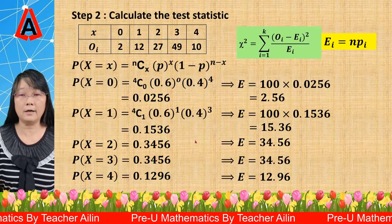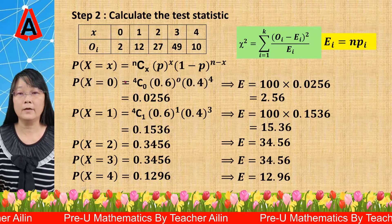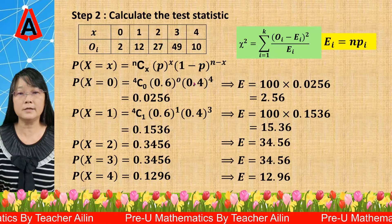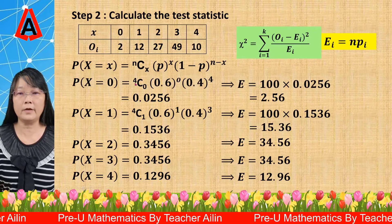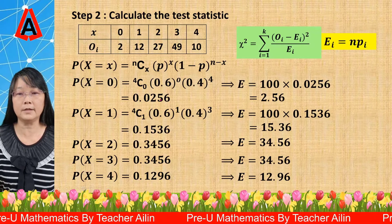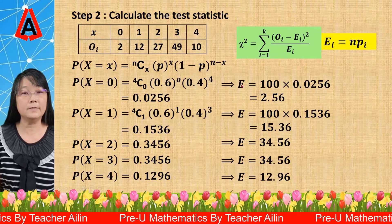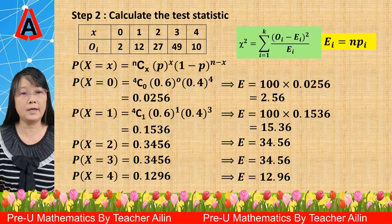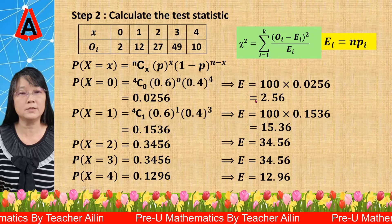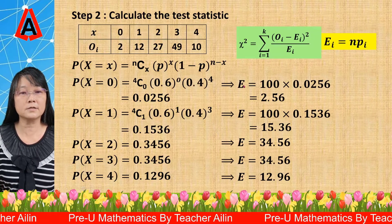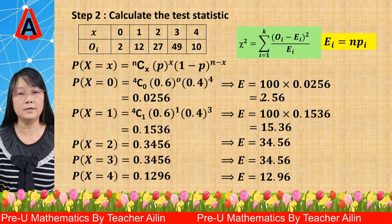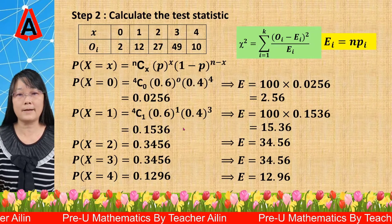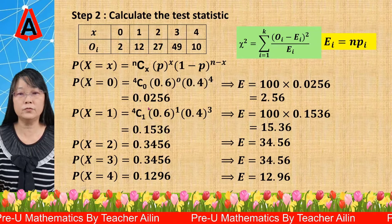Students are advised to show the working steps, where you need to show the substitution of X=0 and N=4. Please do not just press the calculator and give the probability directly. Similarly for E, please show the working step by writing N=100 times the probability to get the value of E. You might lose some marks if you don't show the working steps — you should show at least 2 working steps here.